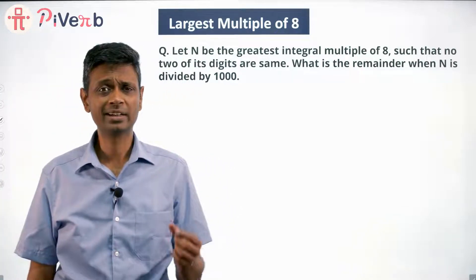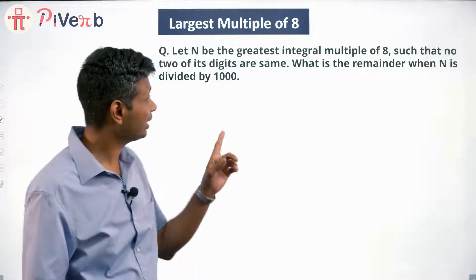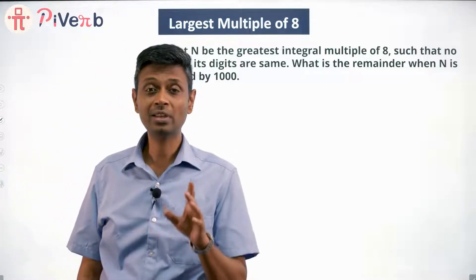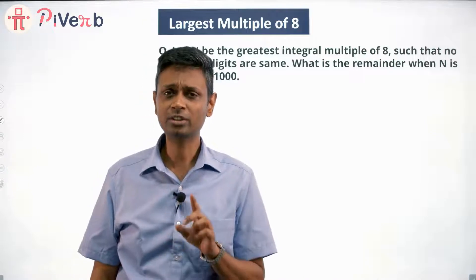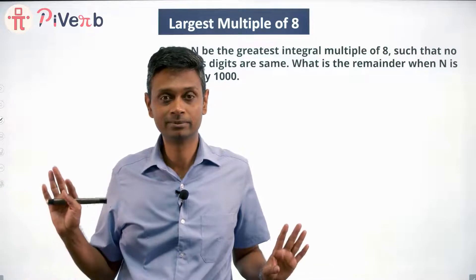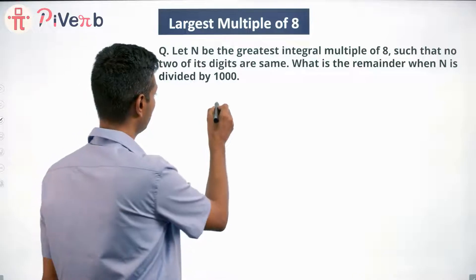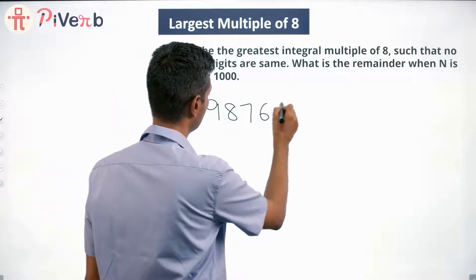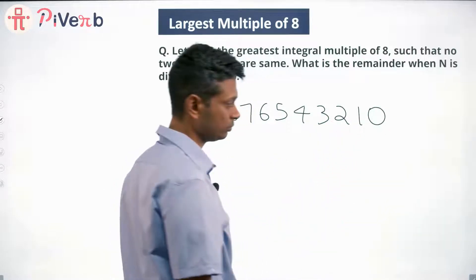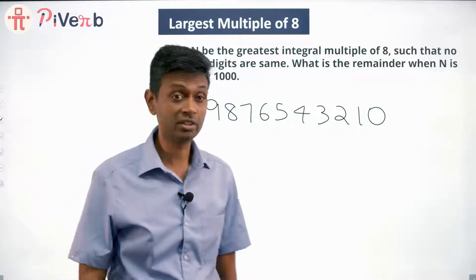What is the largest 10-digit number? Nine, nine, nine... — that can't work, because we're clearly told no two digits can be the same. So we want the largest 10-digit number such that no two digits are the same. If that number also happens to be a multiple of 8, we're done. That number is 9, 8, 7, 6, 5, 4, 3, 2, 1, 0 — this is the largest possible 10-digit number such that all digits are distinct.